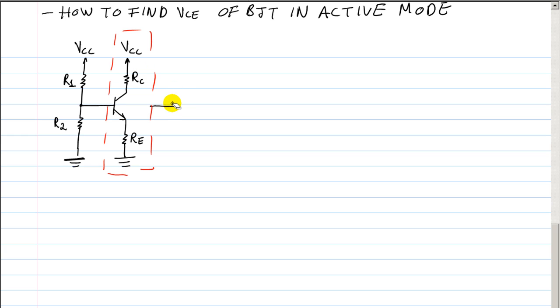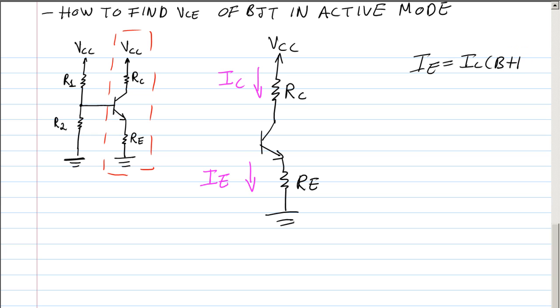So what I'm going to do is go ahead and redraw that part of the circuit, and I'm also going to draw the currents. So we have IC, since this is the collector, and IE for the emitter. And you can use the relationship IE equals IC times beta plus 1 over beta.